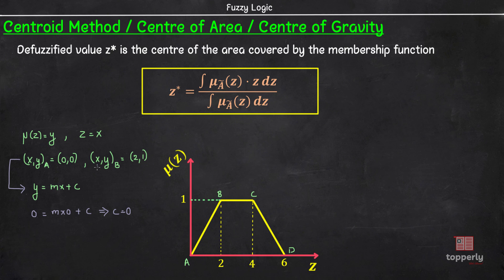Plugging in the values of x and y at A to this equation gives us 0 = m · 0 + c, this implies that c is equal to 0. Similarly, plugging in the values of x, y at B into this equation gives us 1 = m · 2 + c, but we already know that c is equal to 0, therefore this term becomes 0. This gives us m is equal to 1/2. So, the equation of line AB is given by y = x/2 or μ(z) = z/2.